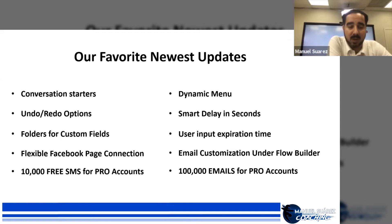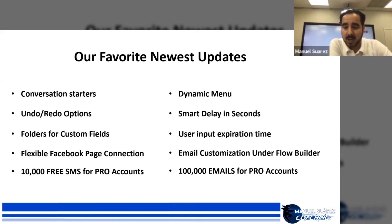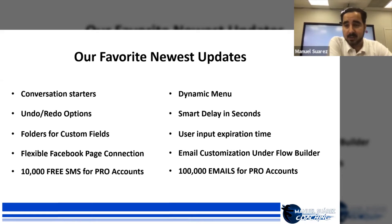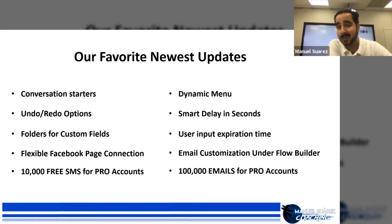There are a bunch of other updates. Pro accounts get 10,000 free SMS — super exciting — plus basically 100,000 free emails. I love the email customization under Flow Builder; you can customize your email marketing a lot more. It's going to become an email marketing platform all on its own. Being able to customize the 'from' address is a big deal — something we were all asking for, and it's now available.